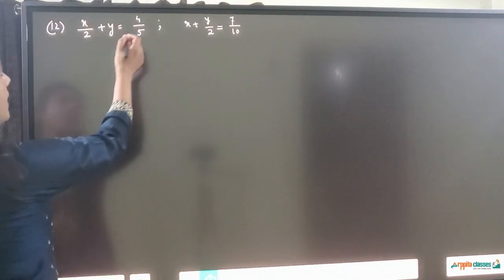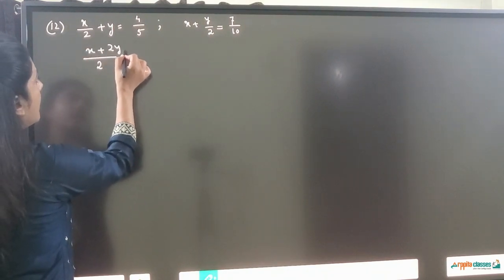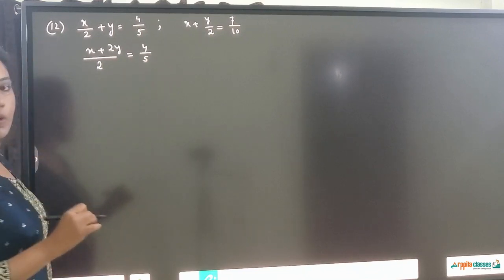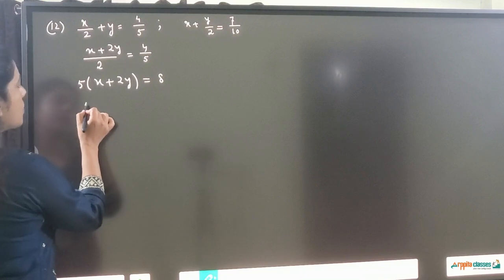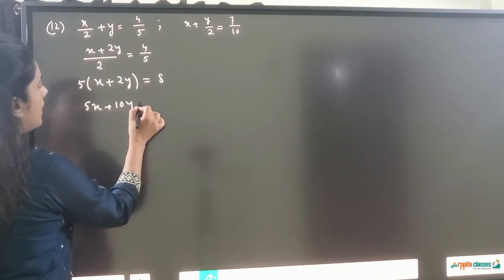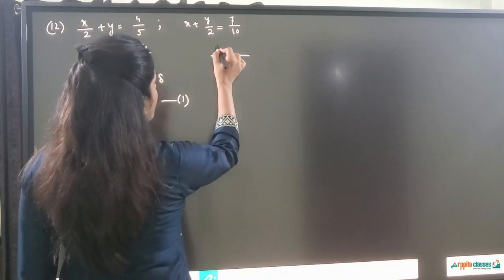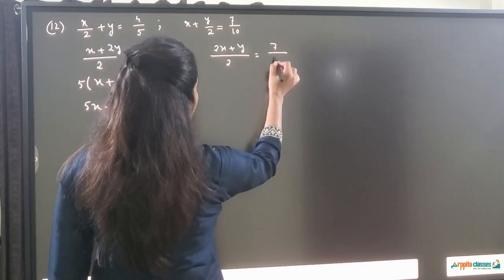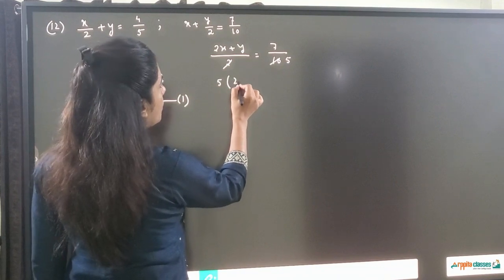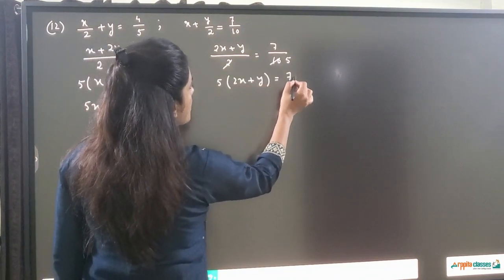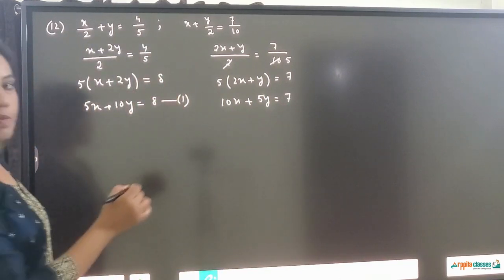Question number 12: (x plus 2) over 2 plus y is equal to 4 by 5. Taking LCM 2 gives x plus 2y equals 4 upon 5. Cross multiplying: 5(x plus 2y) equals 8, so 5x plus 10y is equal to 8. This is equation 1. For the second equation, taking LCM 2 gives 2x plus y equals 7 upon 10. Reducing and cross multiplying: 5(2x plus y) equals 7, so 10x plus 5y is equal to 7. This is equation 2.